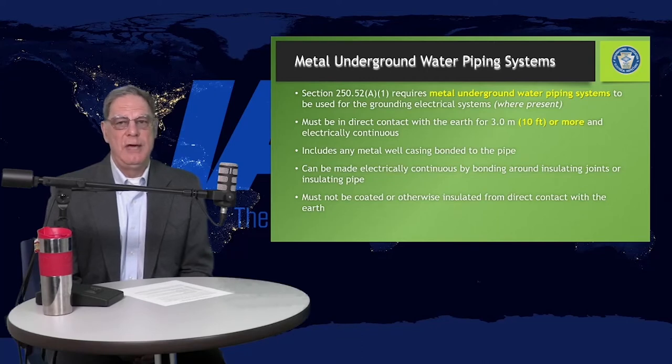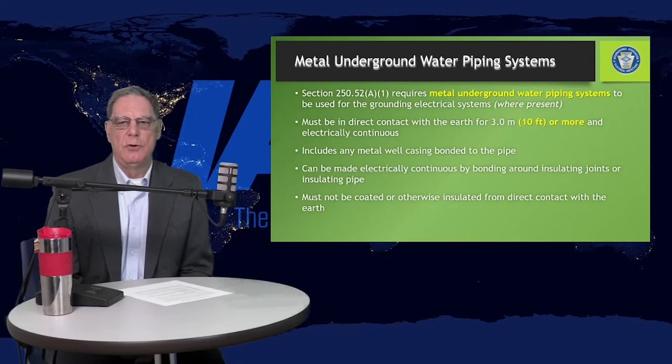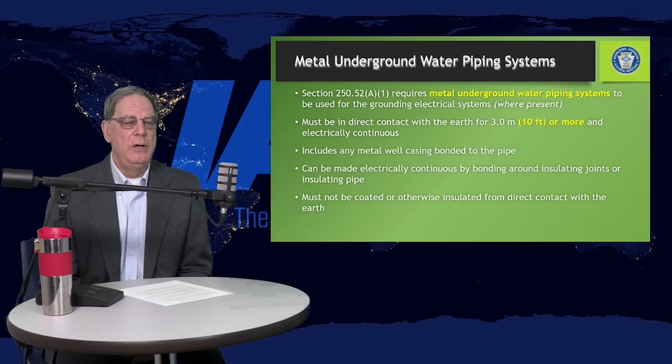It could include a metal well casing if it is bonded to the piping. It can be made electrically continuous by bonding straps that go around insulating joints in the pipe structure. And again, water meters, filters, that kind of thing are commonly there.